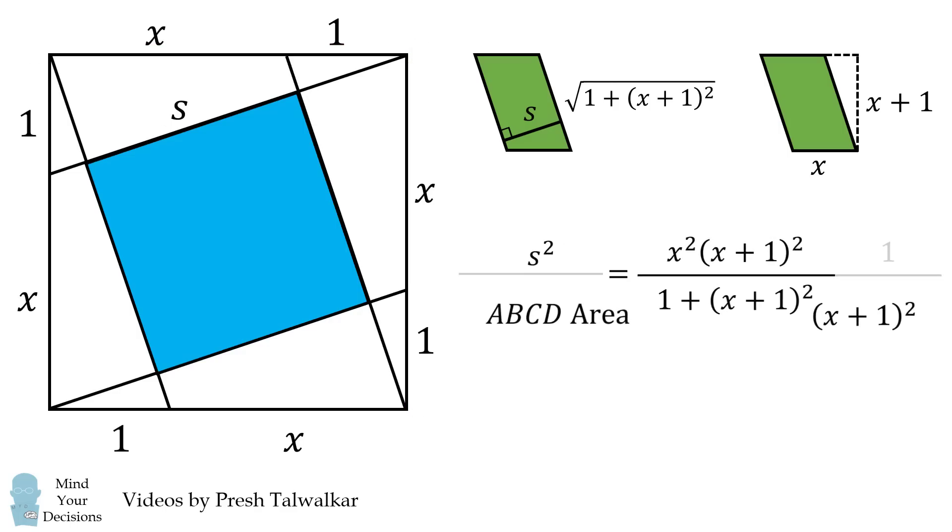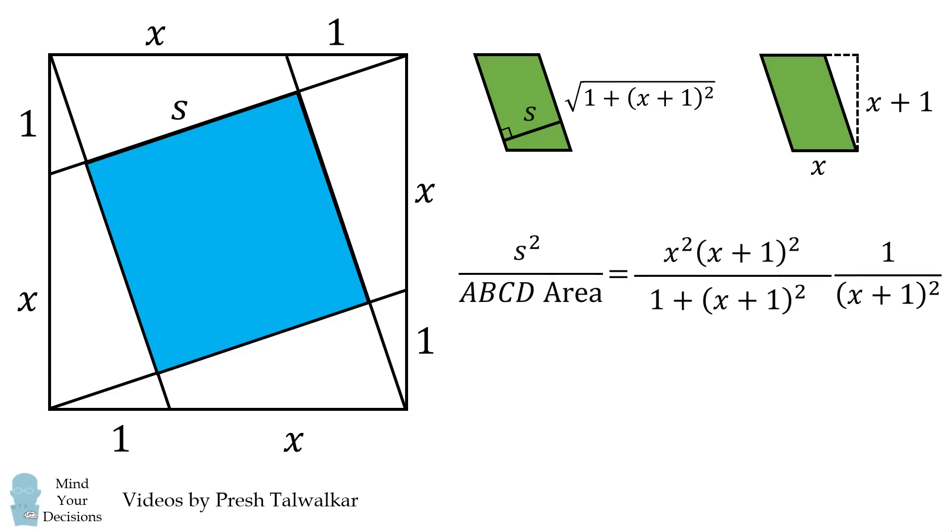We thus take the ratio. We'll then cancel out the x plus 1 squared terms, and that'll leave us with the fraction of the square that's shaded in blue.